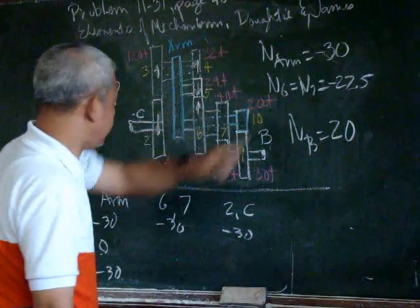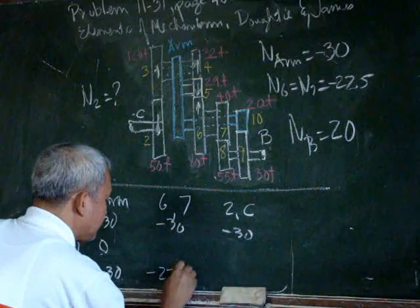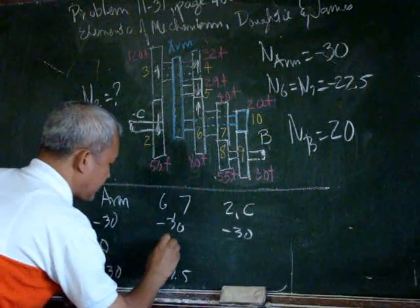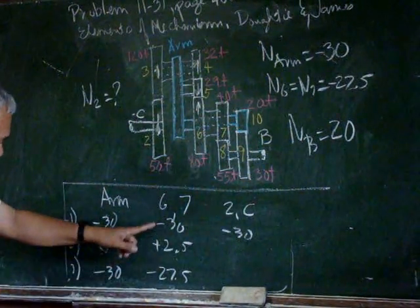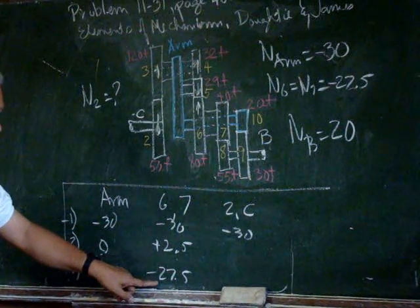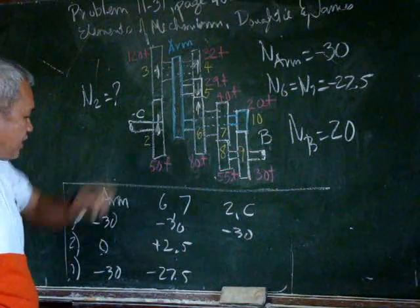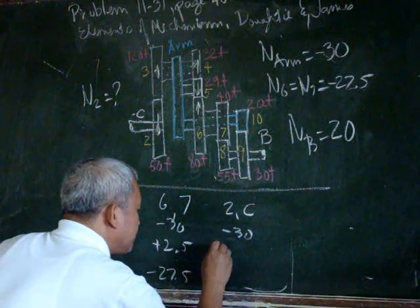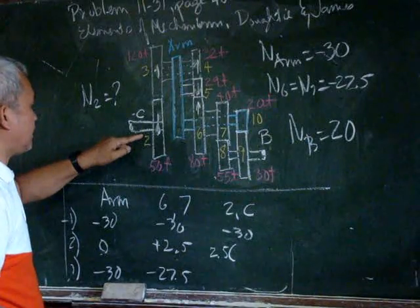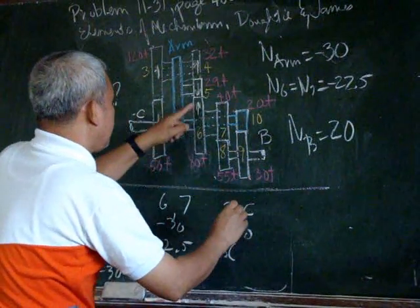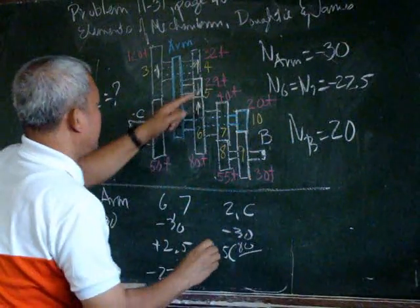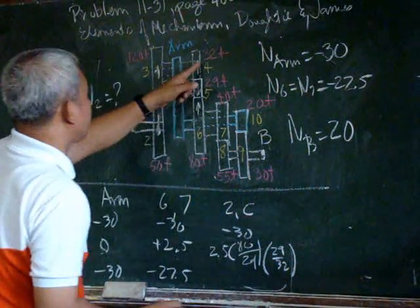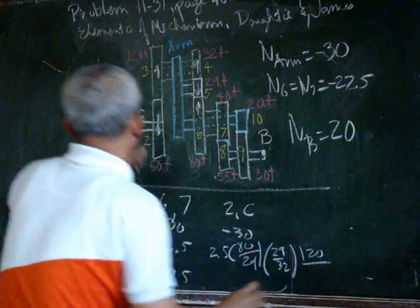Gears 6 and 7 must have a final rotation of negative 27.5. That means in the locked step we have to rotate by plus 2.5 so that negative 27.5 plus 2.5 gives the final rotation of 6 and 7. If we rotate by 2.5, then with the arm locked, we determine the rotation as 2.5 times 80 over 29, times 29 times 32 over 32, then times 120 over 50.